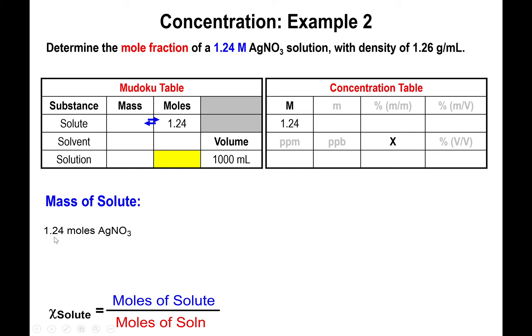If we start with 1.24 moles of silver nitrate, multiply this by the molar mass of silver nitrate, which is 169.87 grams per mole. This gives you the mass of silver nitrate, assuming you have 1.24 moles of solute. It turns out this equals 211 grams. So that's the mass of the solute.